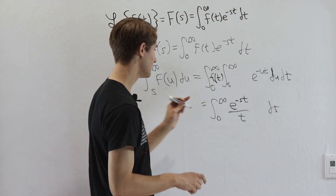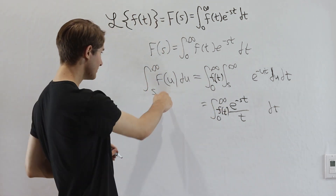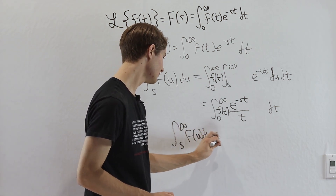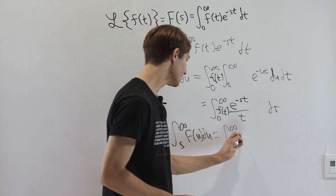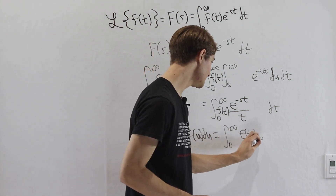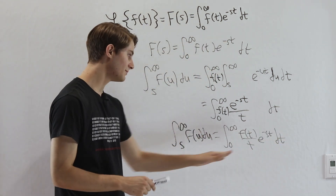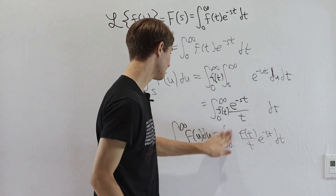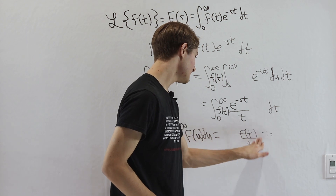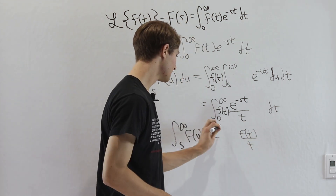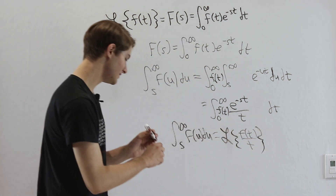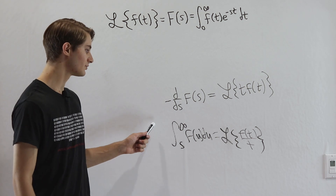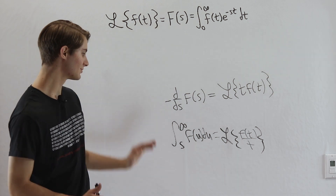Including the f of t factor, we have: the integral from s to infinity of F(u) du equals the integral from 0 to infinity of f of t over t times e to the negative st dt. The right side is exactly the Laplace transform of f(t)/t. So our second identity is: the Laplace transform of f(t)/t equals the integral from s to infinity of F(u) du. These are our two Laplace transform identities for multiplying and dividing by t, derived by playing around with integrals and derivatives.